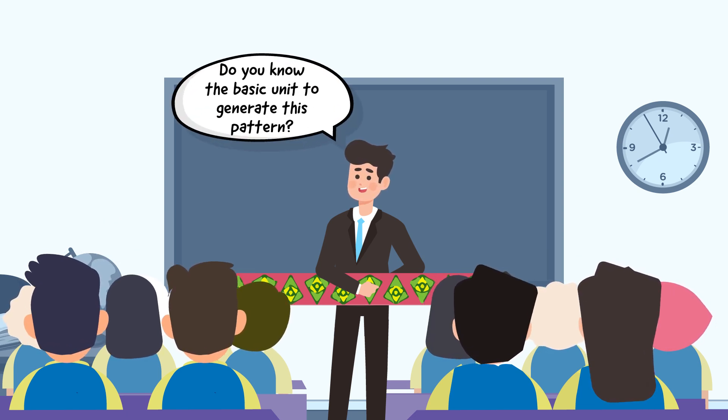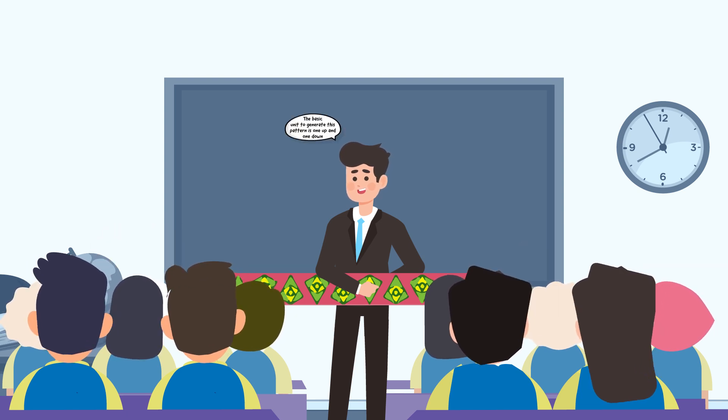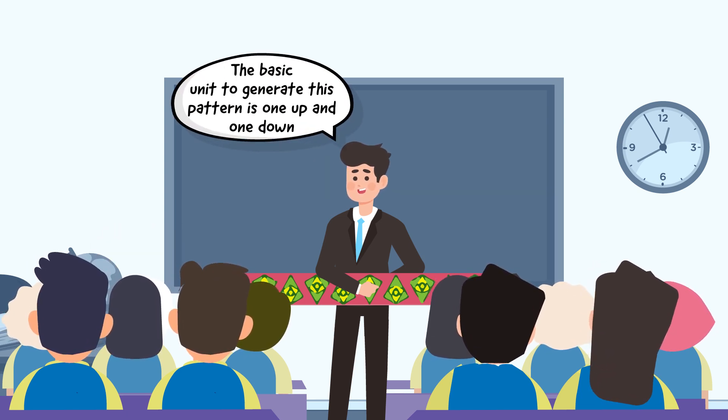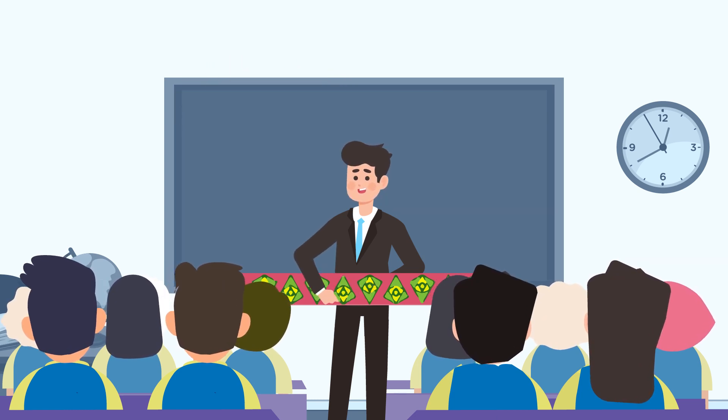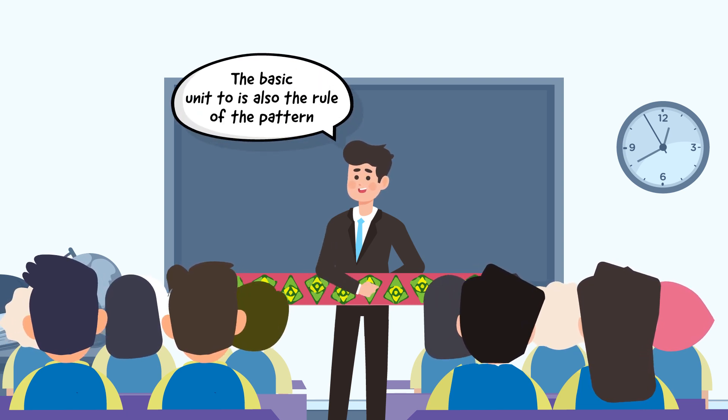Accept all relevant responses. Inform the students that the basic unit to generate this pattern is one up and one down, while pointing out at the border. Conclude by informing that the basic unit is also the rule of the pattern.